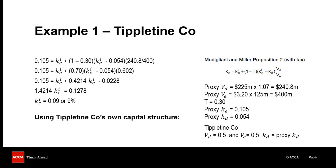Once again, we use the Proposition 2 formula, just like before, but this time we are using it to calculate Tipleton Co's geared cost of equity. We have already worked out the ungeared cost of equity of 9%, we know the tax rate is 30%, the pre-tax cost of debt is 5.4%, and we can use our assumed debt equity ratio for our market values of debt and equity. Putting all of those inputs into the Proposition 2 formula gives us Tipleton Co's geared cost of equity, which in this case is 11.5%. Remember, the geared cost of equity provides a measure of business risk and financial risk based on Tipleton Co's own capital structure.